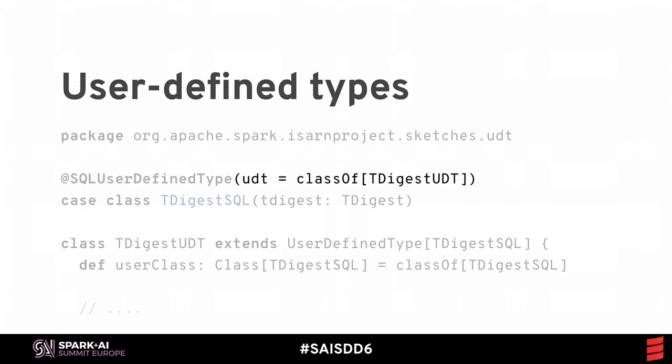The SQL user-defined type is the type that is visible to the user as the result, and it's defined in terms of its companion type, the user-defined type. The user-defined type is actually used internally by the data frame application logic. This type co-refers back to the user-visible type, so because of this co-reference, you typically define these in the same source file.